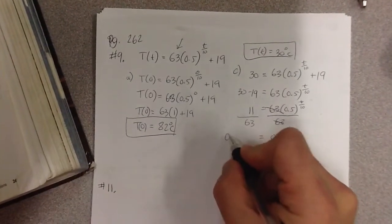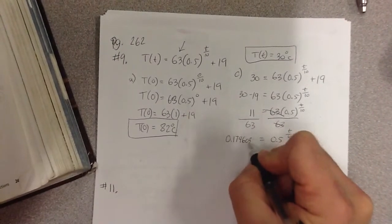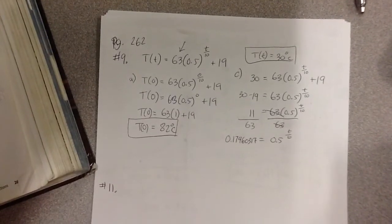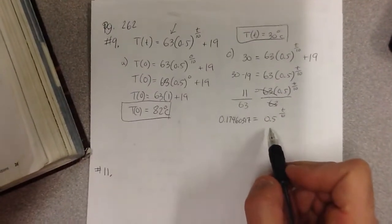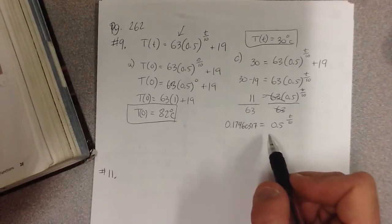And when I do this on my calculator, I'm going to get 0.17460317. I'm going to keep as many decimal places as I can. And then how do you solve something like this? Well, I showed you in class today how to solve something like this.